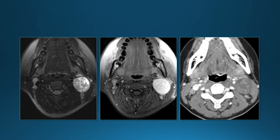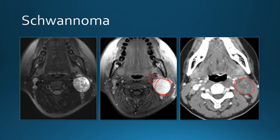Lower in the neck, here's another carotid space mass with the carotid sheath displaced. This lesion is interesting because on post-contrast MRI it enhances with contrast, whereas on post-contrast CT it does not seem to enhance very much. When you see this enhancement pattern, it is generally going to be a schwannoma, because although schwannomas enhance with contrast they tend to enhance slowly.